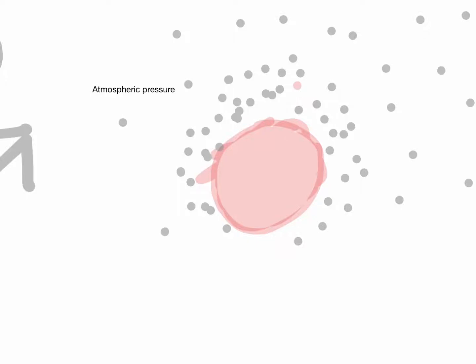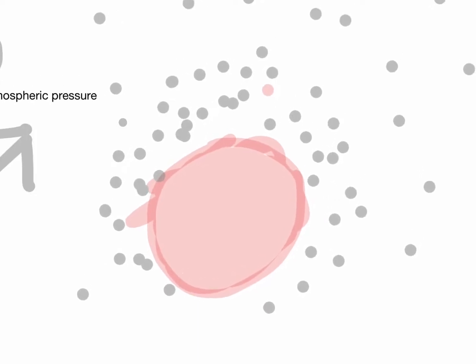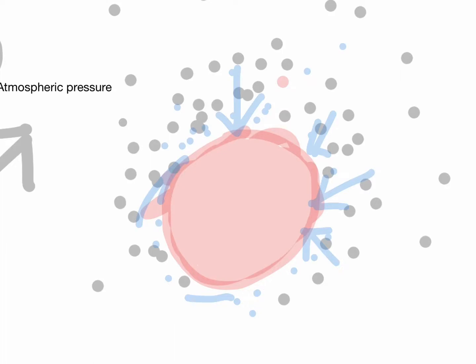In this lecture we will discuss atmospheric pressure. Atmospheric pressure is the pressure due to the atmosphere. If this is your Earth, the air molecules near the Earth have a gravitational force because of their weight, attracting them towards the surface. The gravitational force is greater nearer to the surface, which is why more air molecules are found near the surface.